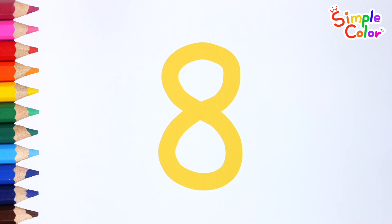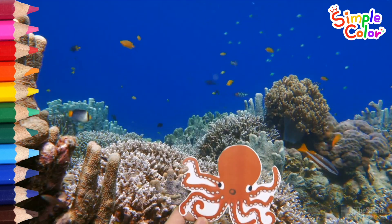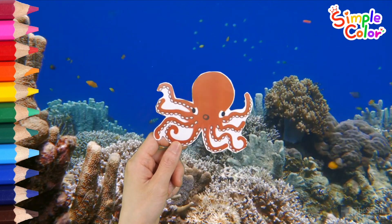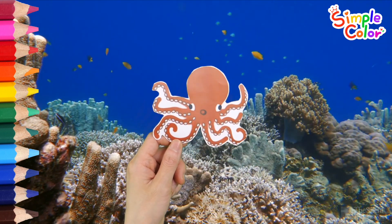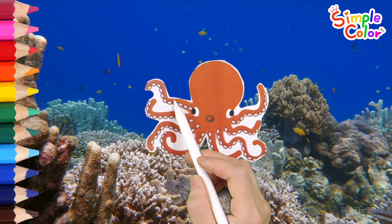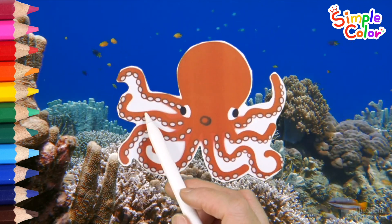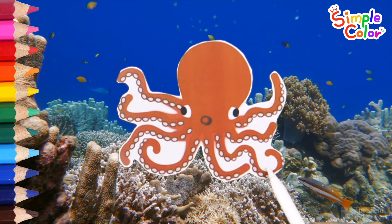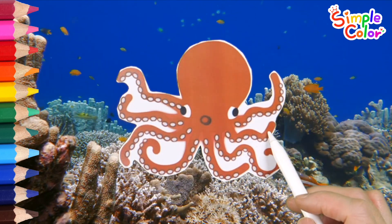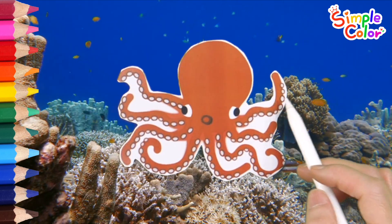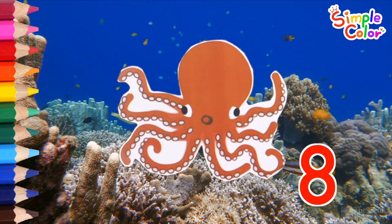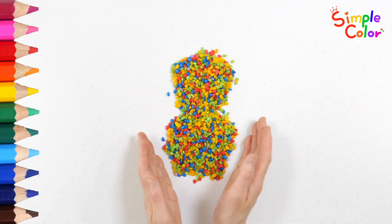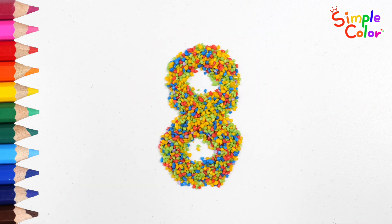8. It is an octopus that lives in the sea. How many legs does an octopus have? 1, 2, 3, 4, 5, 6, 7, 8. Octopuses have 8 legs. 8. Shall we make a number? 8.